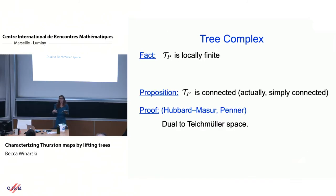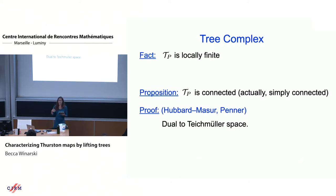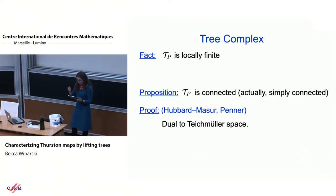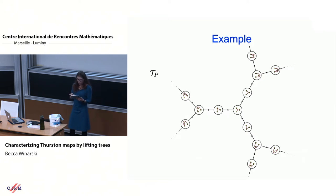A couple of useful facts about the tree complex: first, it is locally finite — for every vertex (an isotopy class of trees), there are only finitely many edges you can contract and only finitely many edges you can add without leaving the hull of the marked set. An equally important but harder result is that the tree complex is connected — in fact simply connected — due to work of Hubbard and Masur, or alternatively Penner, showing it is dual to a triangulation of Teichmüller space.